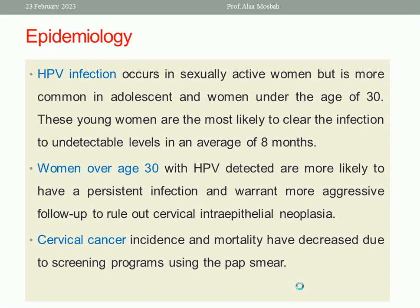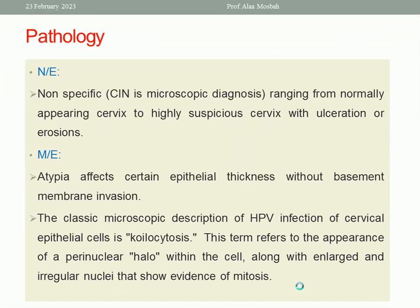Regarding epidemiology: HPV infection occurs in sexually active women, but is more common in adolescents and women under the age of 30. These young women are the most likely to clear the infection to undetectable levels in an average of eight months. However, women over the age of 30 with HPV detected are more likely to have a persistent infection and warrant more aggressive follow-up to rule out CIN. Cervical cancer incidence and mortality have decreased in developed countries due to screening programs using the Pap smear and HPV DNA testing.